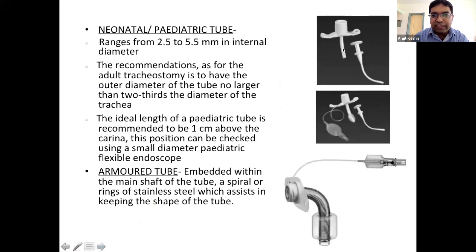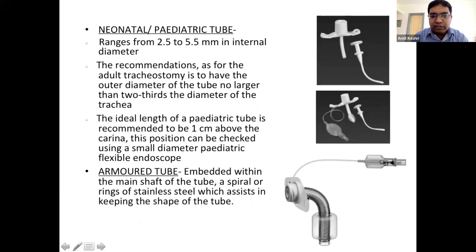Neonatal and paediatric tubes are smaller; an important point is that the lower end of the tube must not touch the carina. Armoured tubes have a reinforced structure that prevents airway collapse, and can withstand compression — useful in palliative care for plastic carcinoma, where a compressing mass will not collapse the airway. These tubes are very helpful in such scenarios.